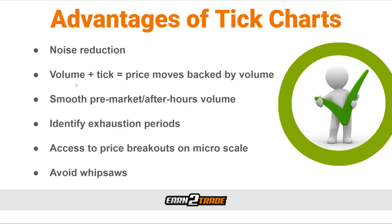Knowing which trends are backed by institutional investors and which ones are backed by retail investors can make or break a trader. Also, tick charts can help smooth pre-market and after-hours trading volume — activity during these hours is usually more fragmented, but tick charts can help us better understand it. Some traders also use tick charts to identify trend exhaustion periods. By giving equal weight to each candle's activity, tick charts can reduce the chance of a false trend continuation bar. The most significant advantage, in many people's eyes, is that they allow us to trade price breakouts on the level of each transactional tick, enabling us to capture even the slightest movements on a microscopic scale.